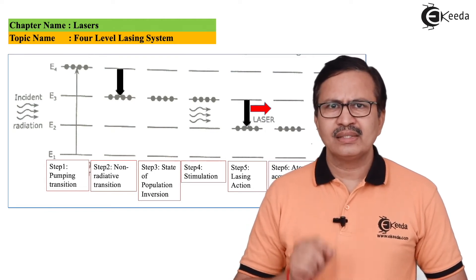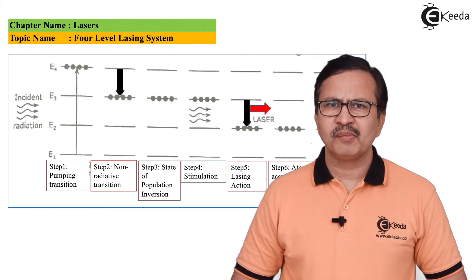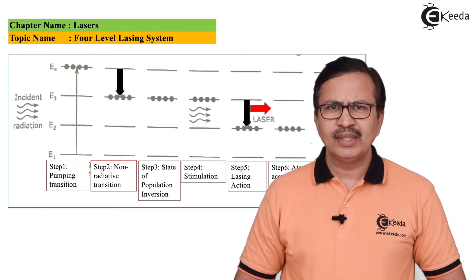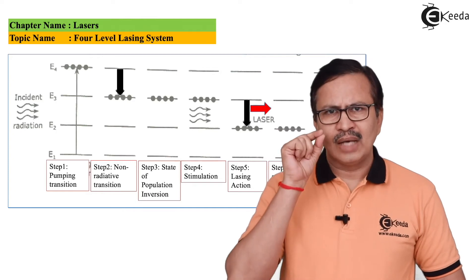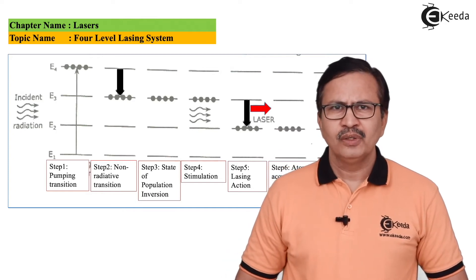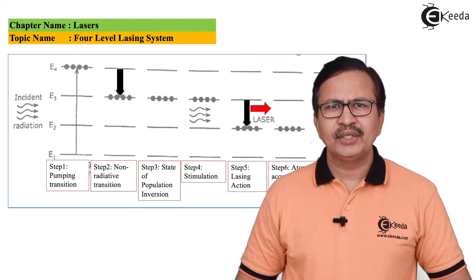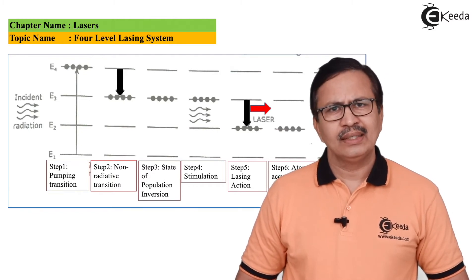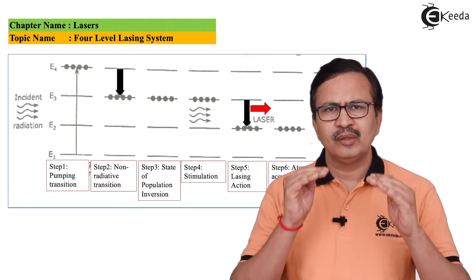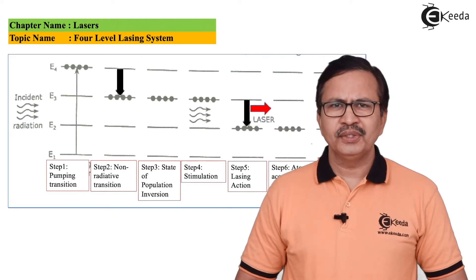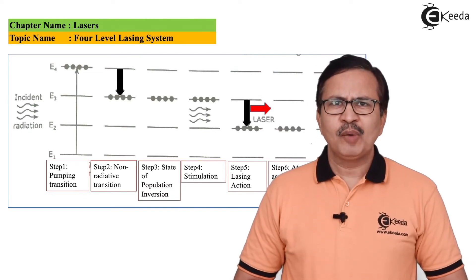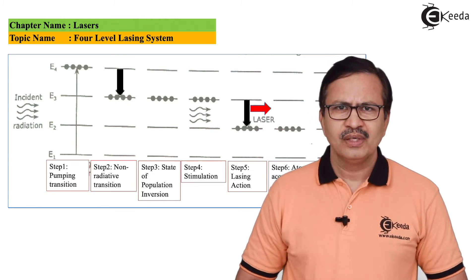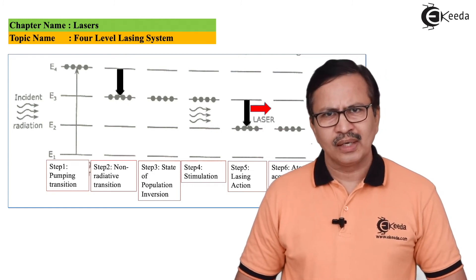Since the excited state's lifetime is around 10 raised to minus 8 seconds, it is too small for stimulated emission to occur. The atoms present in E4 will quickly make a non-radiative transition to the metastable state E3, where they will keep on populating. Due to this, population inversion occurs, which is one of the favourable conditions for stimulated emission.